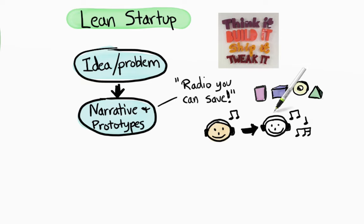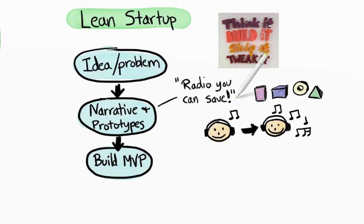Whenever possible, we put real prototypes in front of real users. Once we feel confident this thing is worth building, we go ahead and build an MVP, minimum viable product, just enough to fulfill the narrative, but far from feature complete. You might call it the minimum lovable product. Anyway, the real learning happens once we put something into production. So we want to get there as quickly as possible.